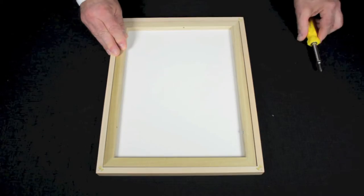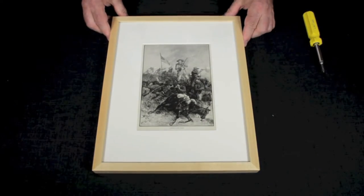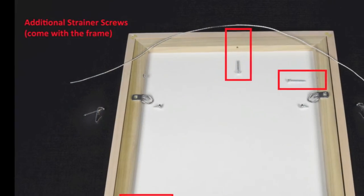When finished with this step, flip your framed piece over and check for dust or fingerprints on the inside of the frame, before securing the stringer with the remaining four screws.